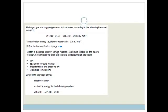It says sketch a potential energy versus reaction coordinate graph for the above reaction. Clearly label the axes and indicate the following: ΔH which is your enthalpy or the heat of the reaction, the activation energy for the forward reaction, reactants and products, and the activated complex X.